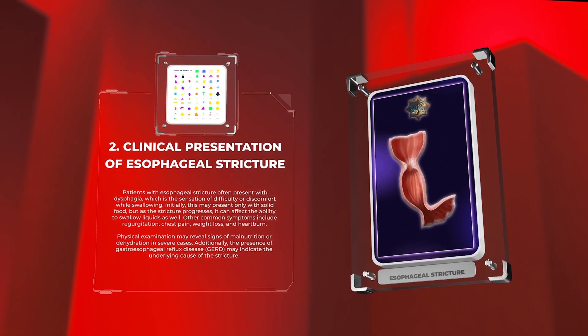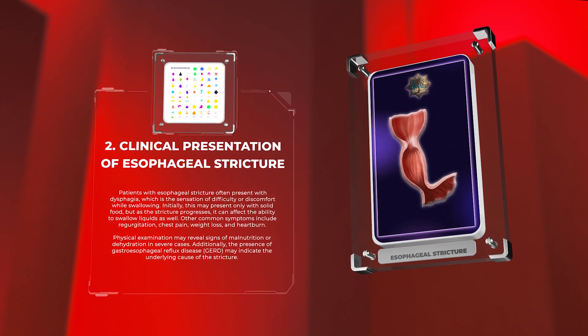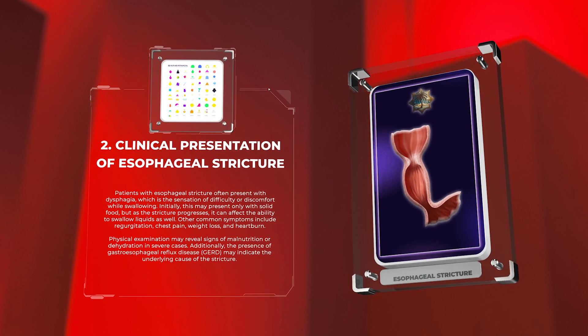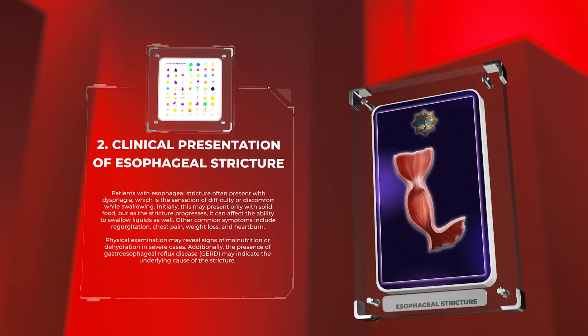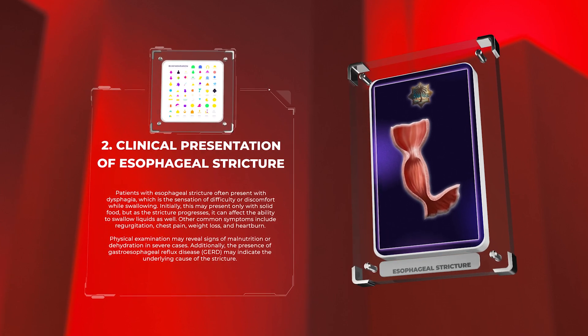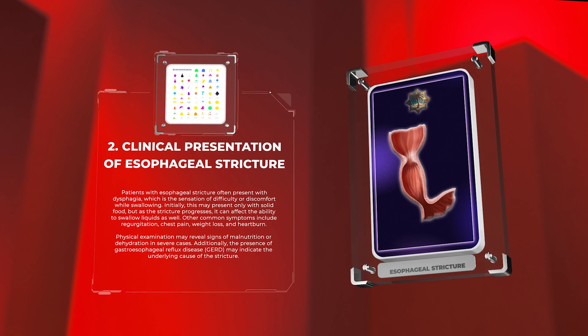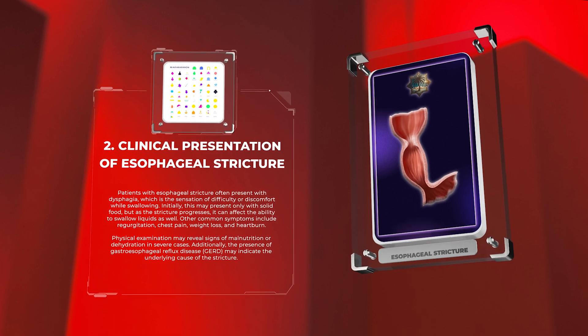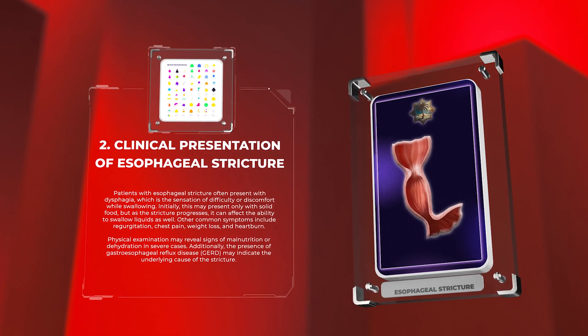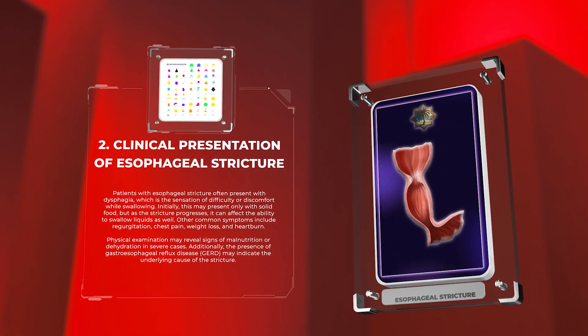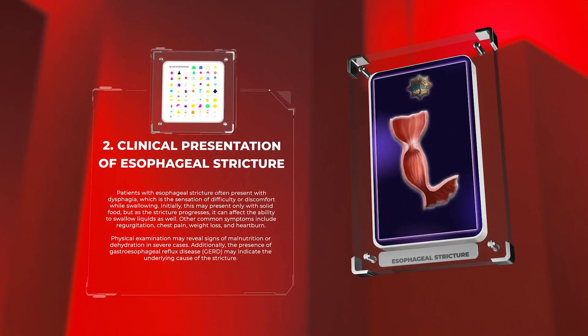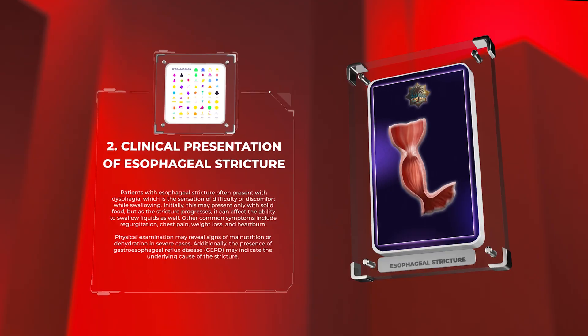Physical examination may reveal signs of malnutrition or dehydration in severe cases. Additionally, the presence of gastroesophageal reflux disease may indicate the underlying cause of the stricture.